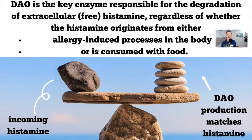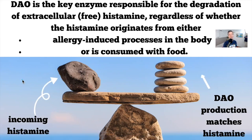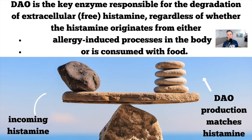DAO is the key enzyme responsible for the degradation of extracellular — or free — histamine, regardless of whether that histamine originates from the body or is consumed with food. The balance works like a scale: incoming histamine, whether from food or your own body, is matched by DAO production. Histamine is released, goes to its target receptor, does its job, and then DAO does a cleanup and reduces histamine levels.